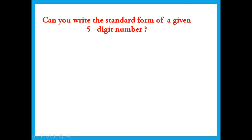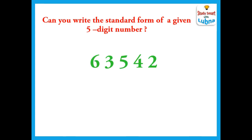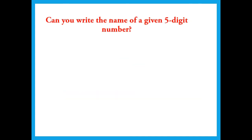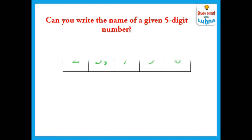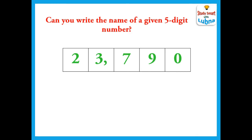Here is a short test for you. A 5-digit number is given: 6, 3, 5, 4, 2. You have to write the standard form of this number by putting a comma after the correct period. Another test: can you write the name of a given 5-digit number? You have to write the number in words. Good luck and thank you.